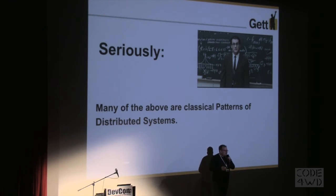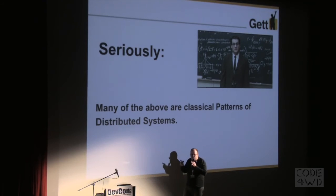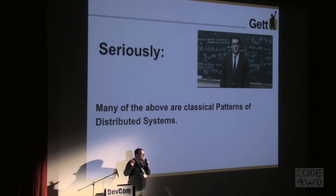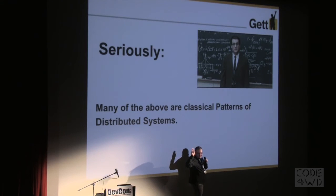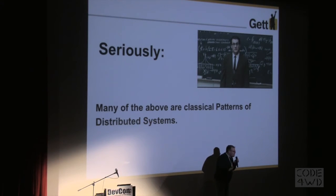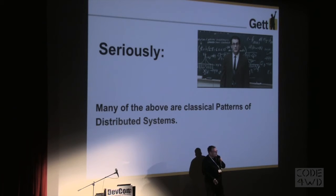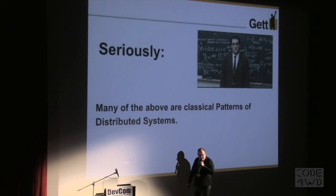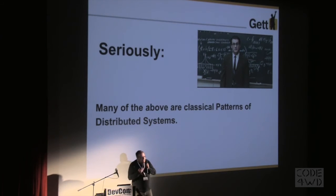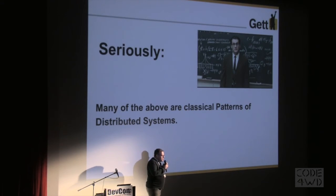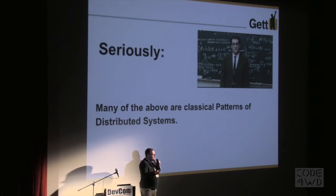Anyone know what the first rule of distributed systems is? The first rule is: try to avoid doing distributed systems. The second rule is also: try to avoid doing distributed systems. Distributed systems are complex, hard to maintain, and full of tricky issues. If you can do something without distribution, it's probably better — do it only out of necessity. And then something will break, usually on a Friday night.